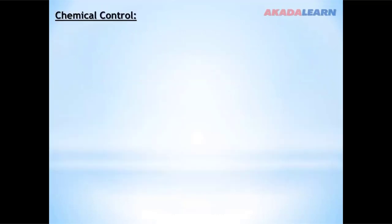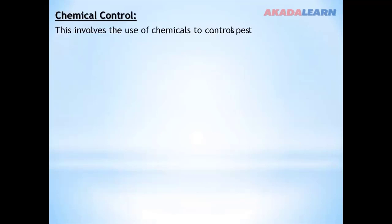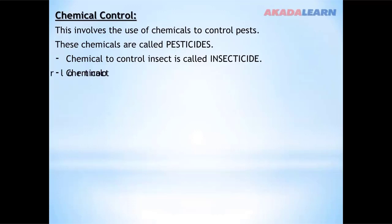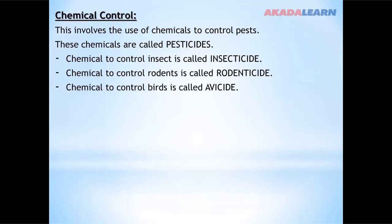Chemical control involves the use of chemicals to control pests. The chemicals used for controlling pests are known as pesticides. They can be further classified into insecticides for controlling insects, rodenticides for controlling rodents, and avicides for controlling birds.